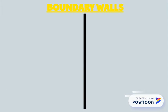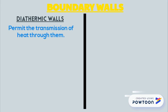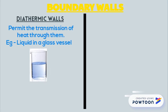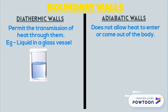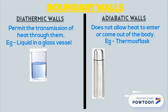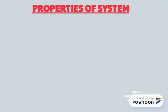The boundary wall is also of two types. Number 1: Diathermic walls, which permit the transmission of heat through them. For example, if you keep a liquid in a glass vessel, the liquid and surroundings exchange heat through the glass walls. Number 2: Adiabatic walls, which do not allow heat to enter or exit the body. Example: a thermoflask.